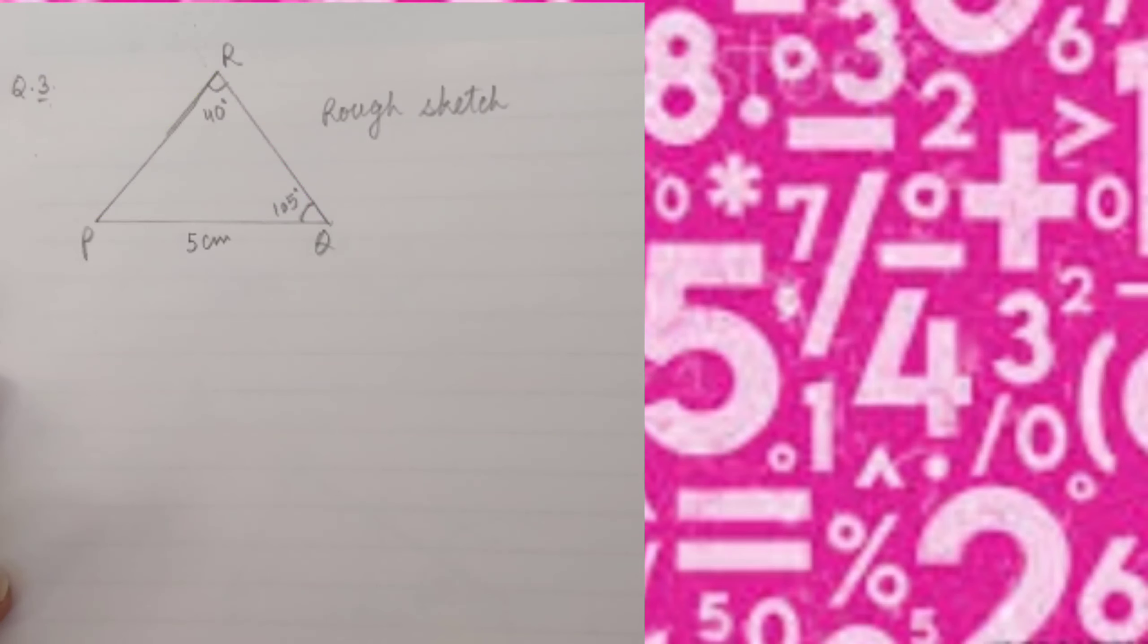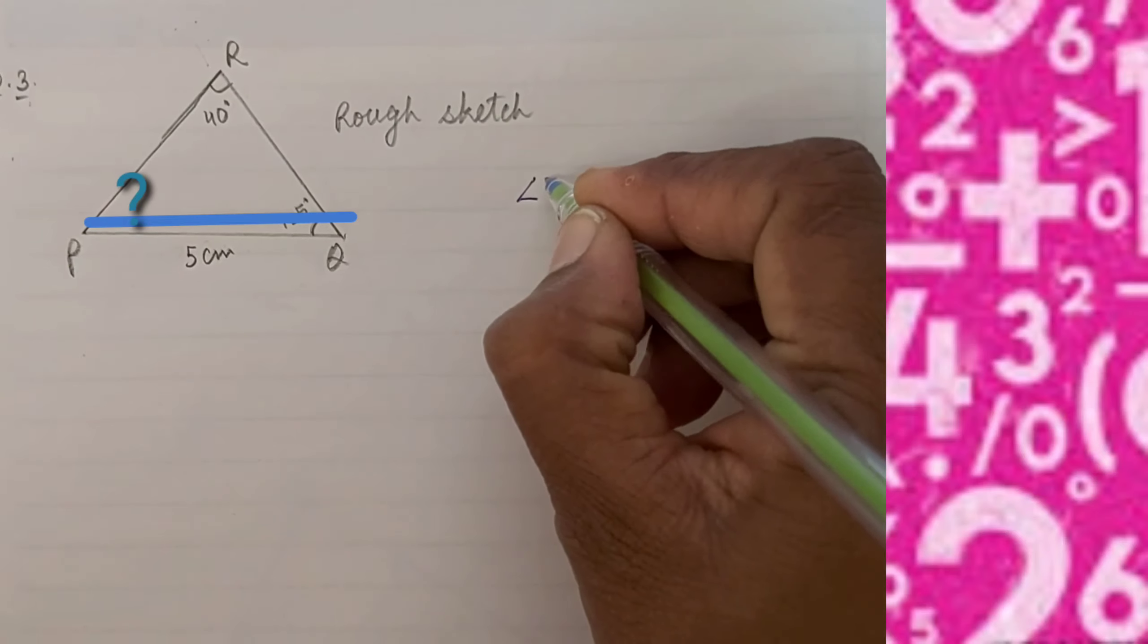First, we will draw a rough sketch of triangle PQR and label it. Line segment PQ is given, angle Q is given, but angle P is not given.